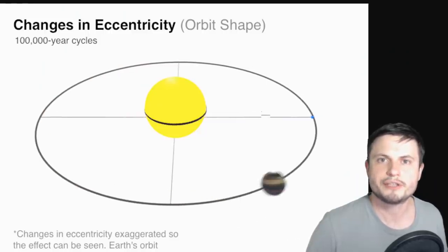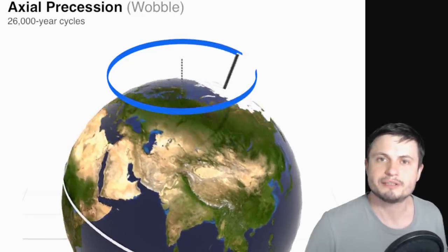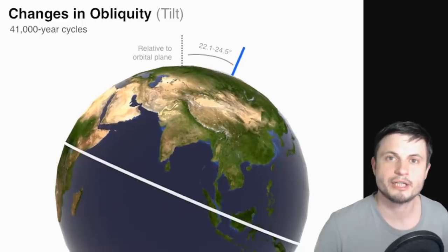Changes in eccentricity and axial precession probably matter as well but it seems that the major component when it comes to interglacial and glacial periods or basically ice ages is this.